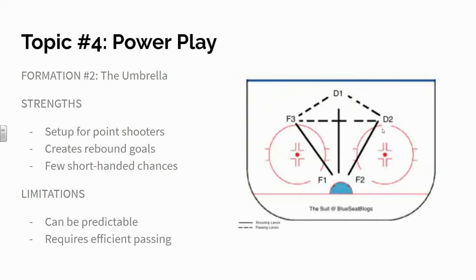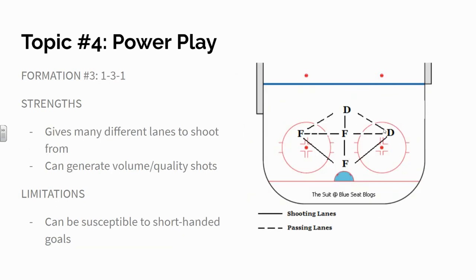So we may use the umbrella at times this season, and we'll work on it in practice. The third and final formation is the most commonly used power play formation today. It's called the 1-3-1. It uses the umbrella principle of having three players up high, but instead of having two players down low,